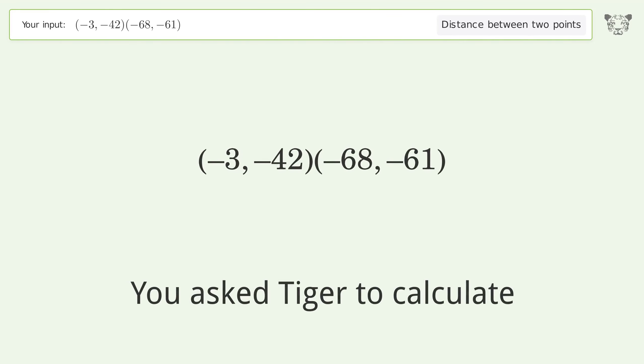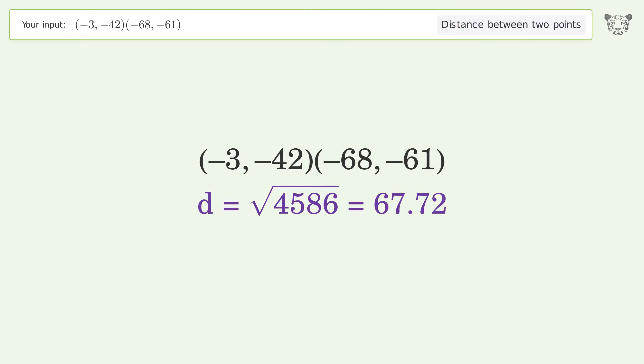You asked Tiger to calculate the distance between two points. The distance between the two points is the square root of 4586, or 67.72.